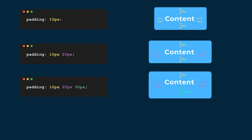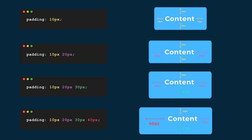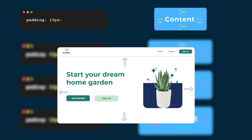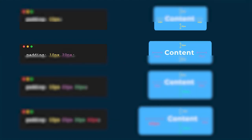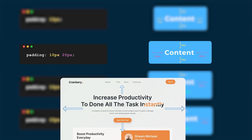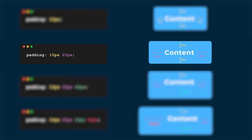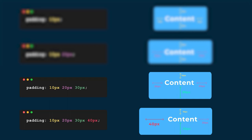We can also use three values such as padding 10px, 20px, and 30px. This means 10 pixels on the top, 20 pixels on the right, 30 pixels on the bottom, and 20 pixels on the left. And if we specify all four values — padding 10px, 20px, 30px, 40px — this means 10px top, 20px right, 30px bottom, and 40px left. For most interfaces, the first two are the most common. One value for equal spacing on all sides, and two values when you want different vertical and horizontal spacing.